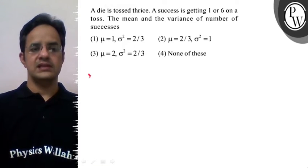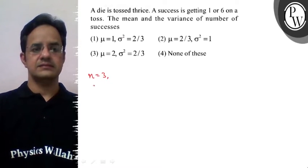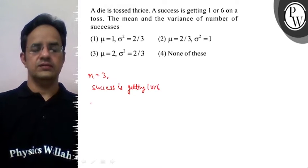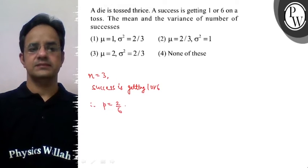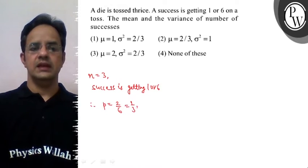Here the number of tries we have done is 3, and success is getting 1 or 6. So therefore, the probability of success will be 2 by 6, which is 1 by 3, and that of the failure, which is 1 minus p, will be 2 by 3.